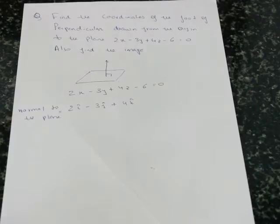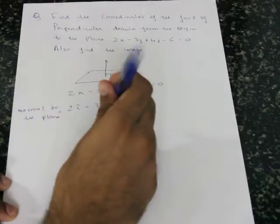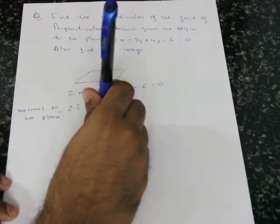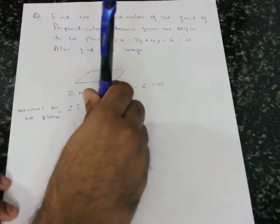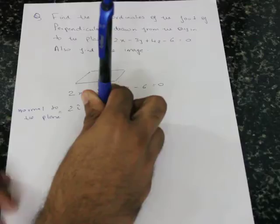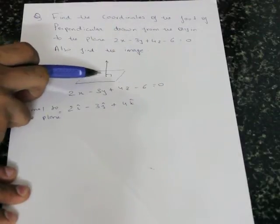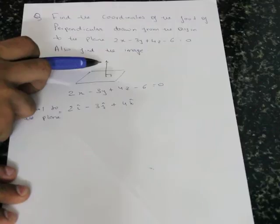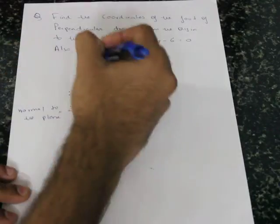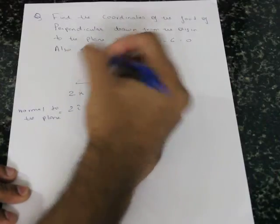Any plane surface has a normal, and the normal is nothing but a perpendicular line coming out from that surface. So this pen, held at 90 degrees to this paper, is the normal to the plane. As you can see, at 90 degrees this line forms a normal. You can have multiple normals, so any line at 90 degrees also becomes a normal.